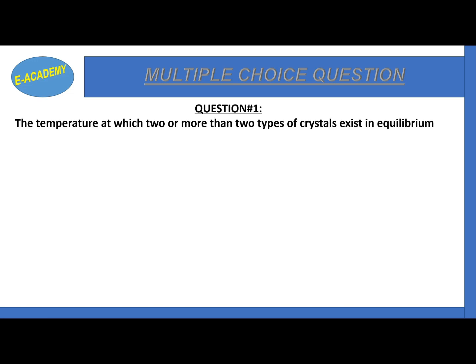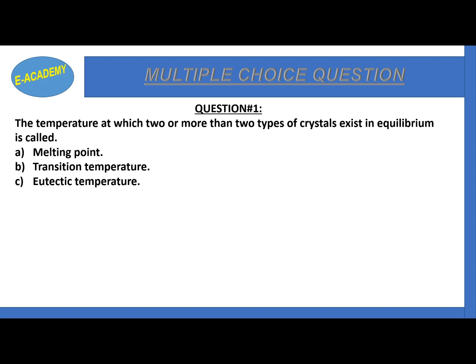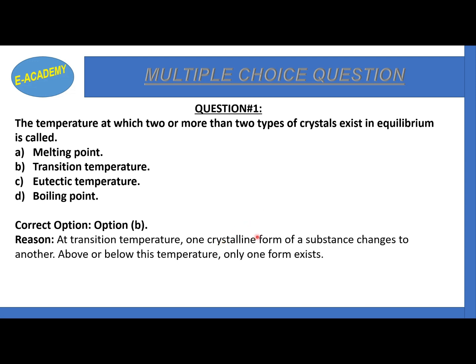Question number 1: The temperature at which 2 or more than 2 types of crystals exist in equilibrium is called? The correct option is B: transition temperature. At transition temperature, one crystalline form of a substance changes to another; above or below this temperature, only one form exists.